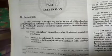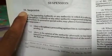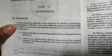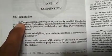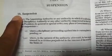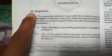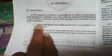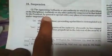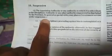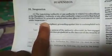Rule number 10 of Central Civil Services Classification Control and Appeal Rules 1965 deals with suspension. Sub-rule number 1 of Rule 10 says that the appointing authority, or any authority to which it is subordinate, or the disciplinary authority, or any other authority empowered in that behalf by the President by general or special order, may place a government servant under suspension.